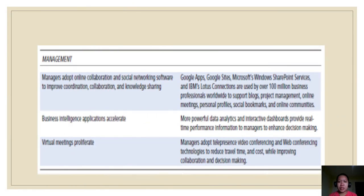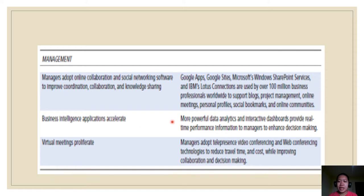Managers are adopting online collaboration and social networking software to improve coordination, collaboration, and knowledge sharing. Google Apps, Google Sites, Microsoft's Windows SharePoint Services, and IBM's Lotus Connections are used by over 100 million business professionals worldwide to support blogs, project management, online meetings, personal profiles, social bookmarking, and online communities. Business intelligence applications are also accelerating, with more powerful data analytics and interactive dashboards providing real-time performance information to managers to enhance their decision making.